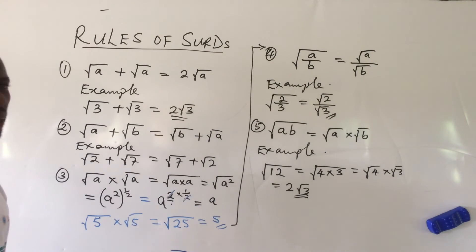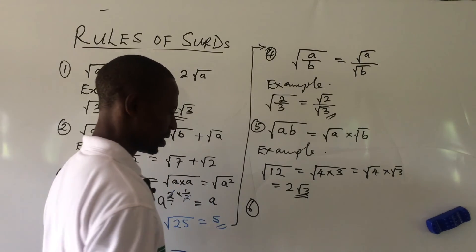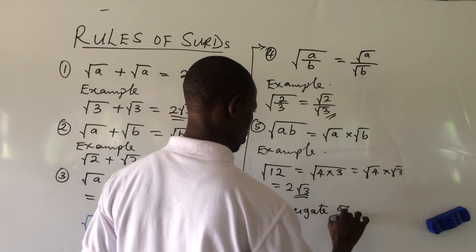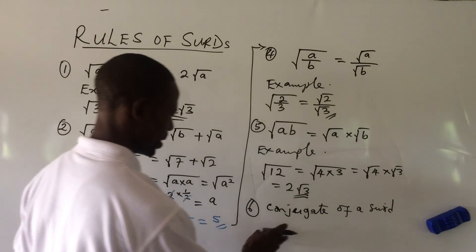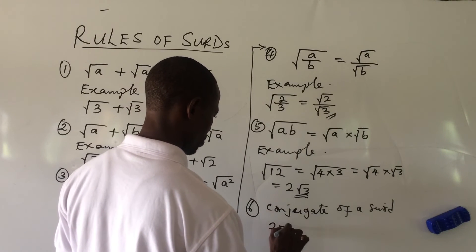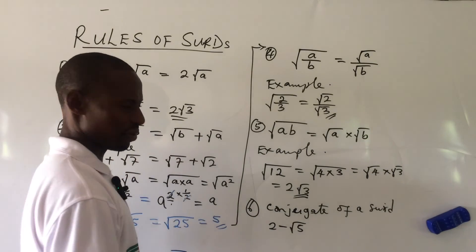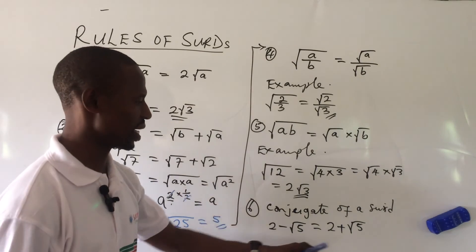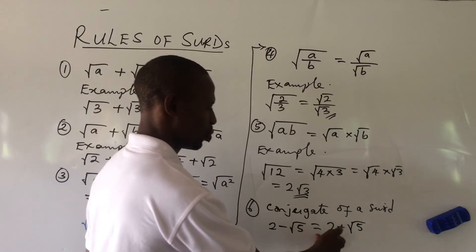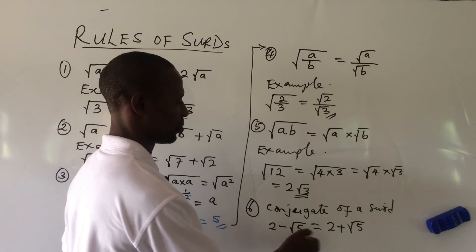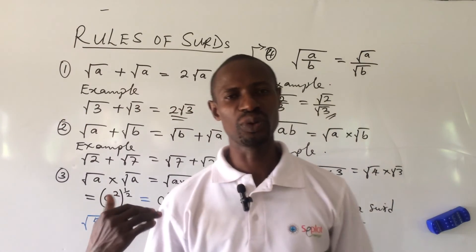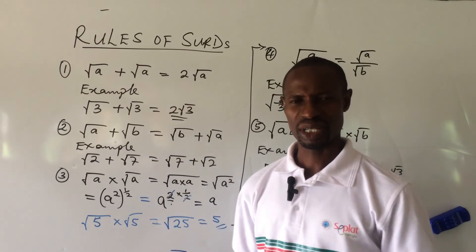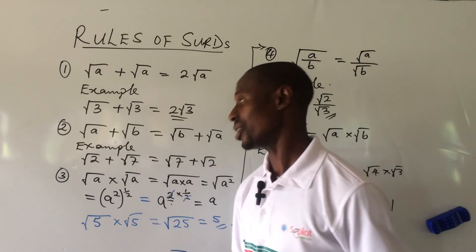Another concept to include here is the conjugate of a surd. If you have a surd like 2 minus root 5, its conjugate is 2 plus root 5 — the sign simply changes from minus to plus. These are some of the key rules we'll be working with in our surd challenges, so do subscribe as we dive into more problems.